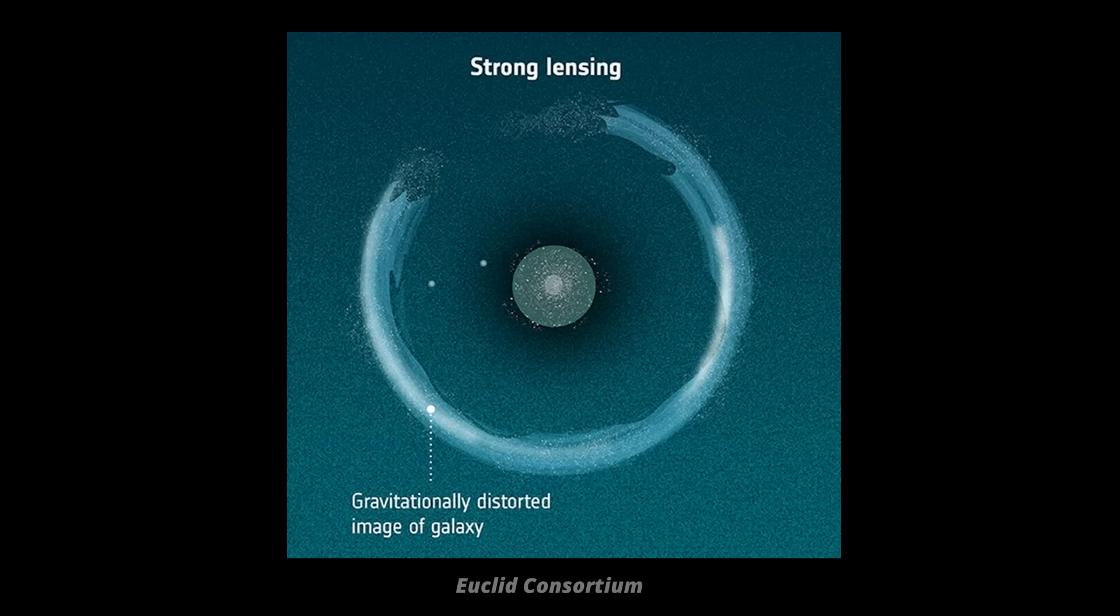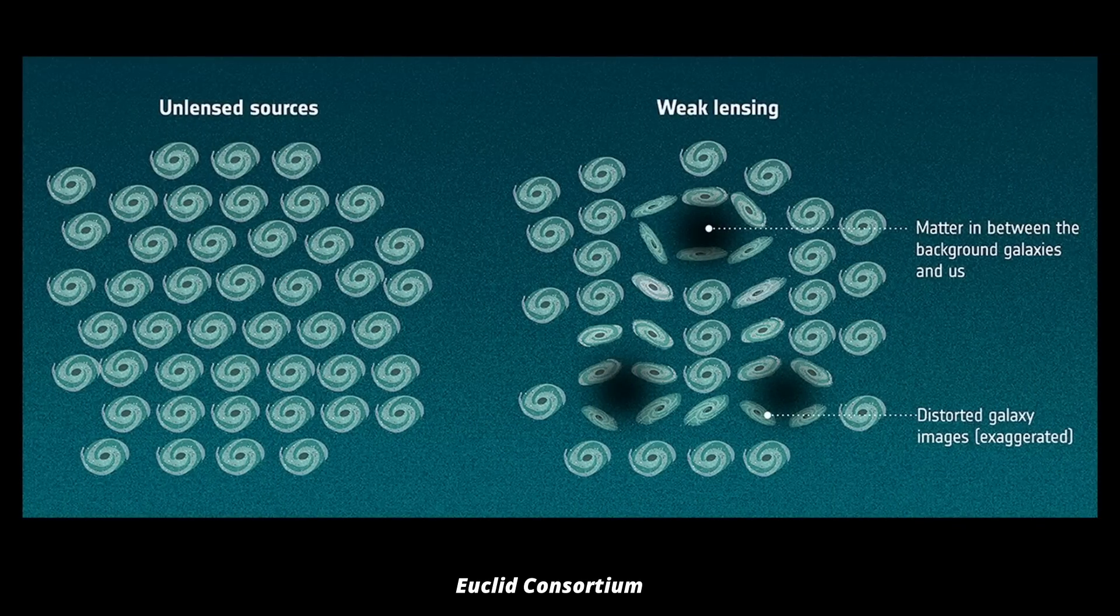In contrast to strong gravitational lenses that are quite easy to identify even by eye, weak gravitational lenses just make small background distortions that one identifies statistically. Still, the idea is the same.